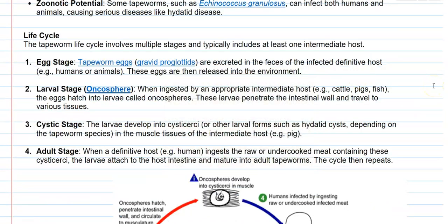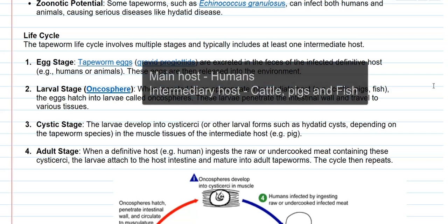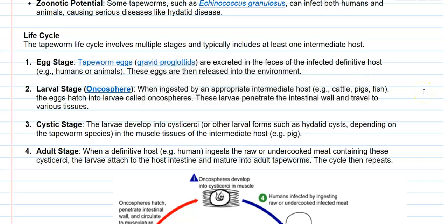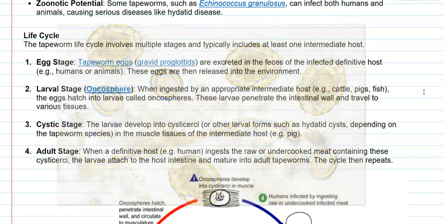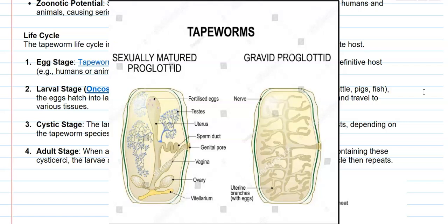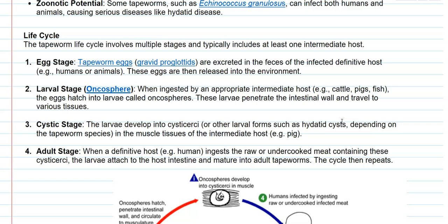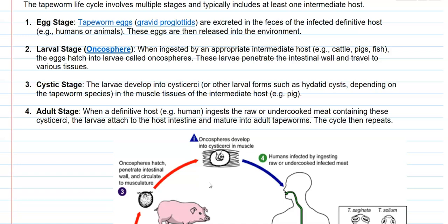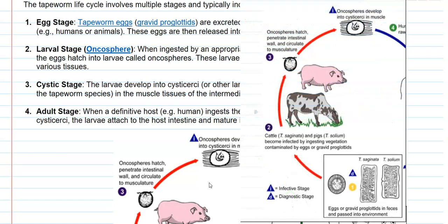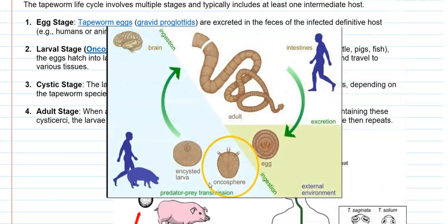Next we look at the life cycle of the tapeworm. It involves multiple stages that typically include at least one intermediate host — a main host and an intermediate host are both associated with the life cycle of the pathogen. The first stage is the egg stage. The tapeworm eggs, technically referred to as gravid proglottids — which are the matured egg sacs of the tapeworm — are excreted in the feces of the infective definitive host, mainly humans or sometimes animals. These eggs are released into the environment, and when intermediate hosts such as cattle, pigs, or fish graze and ingest the eggs, the eggs reach the intestinal layers where they hatch into immature forms called larvae, technically referred to as oncospheres.